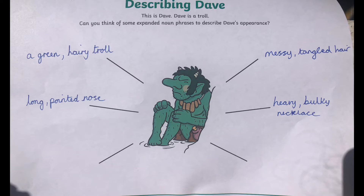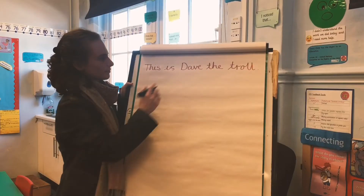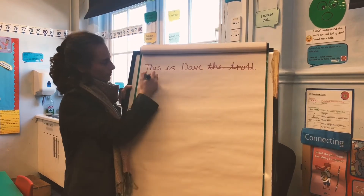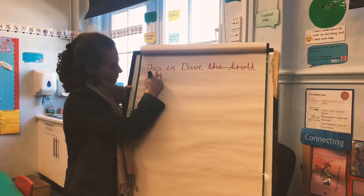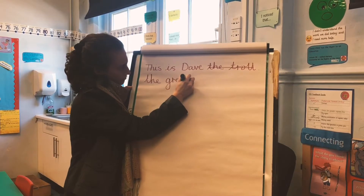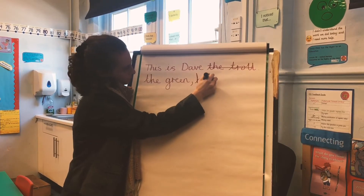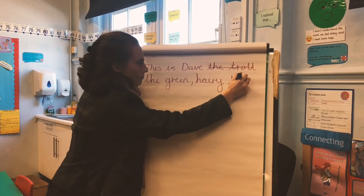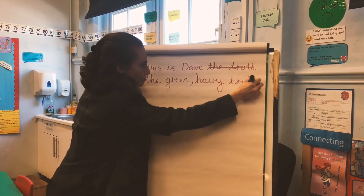I'm going to choose 'a green, hairy troll' as my first expanded noun phrase that I will use in my description. So we can get rid of that and replace it with: This is Dave the green, hairy troll.